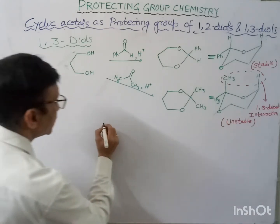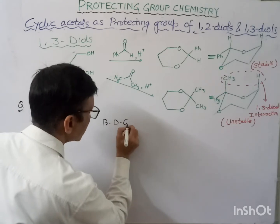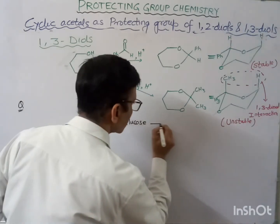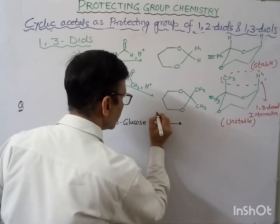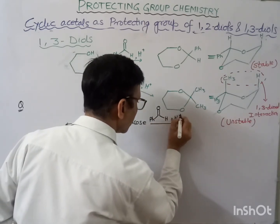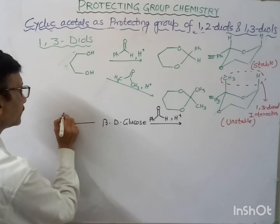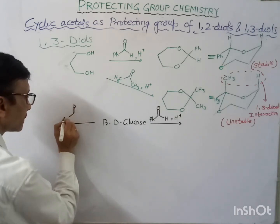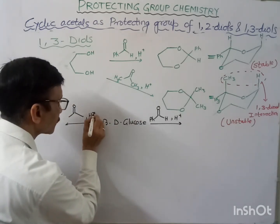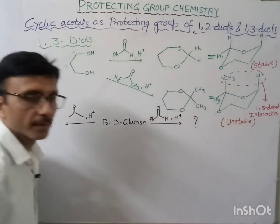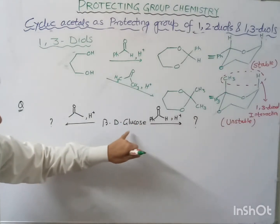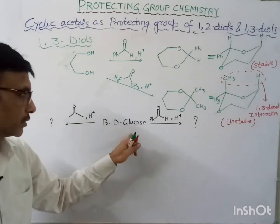Suppose we have beta-D-glucose. What would be the product after protection if we are using benzaldehyde in acidic conditions, and if we are using acetone in acidic conditions? When we have many OH groups in beta-D-glucose, let's determine the product.